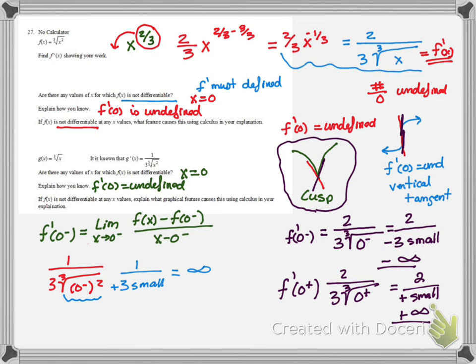And when we look at it the same way, but we're looking at a 0 plus squared, it also is 1 over positive 3 small or positive infinity. And so what that means, from a graphical sense,